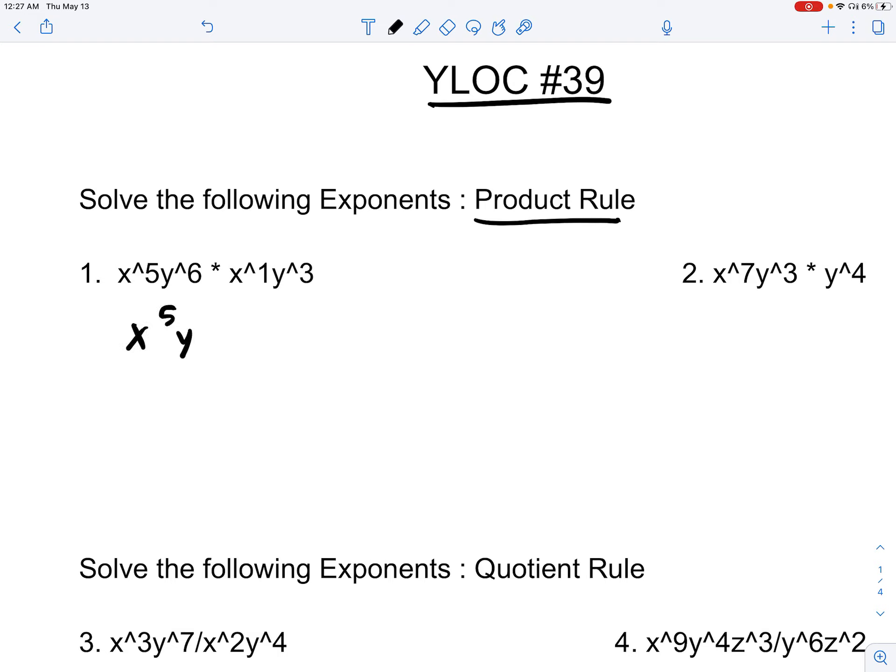All we have to do is find out our common bases. In this case, our common bases are x and y. Now, if we rearrange this, we get x5 times x1 times y6 times y3. y6 plus 3, since they're the same bases, times x5 plus 1, since they are the same bases.